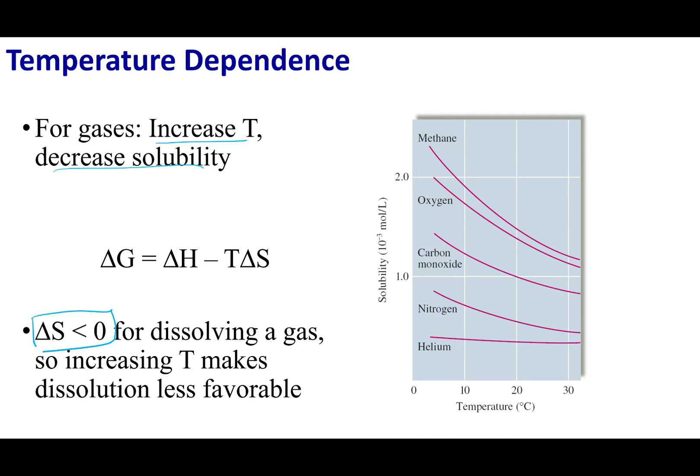So if that's the case, if my ΔS is negative, well, this whole term becomes positive. And what you'll notice is that if we increase my temperature, you will see that this is going to start to go up. And if you make it more and more positive, then ΔG becomes more and more positive, and thus the solubility goes down. So for most gases, as you increase the temperature, the solubility is going to go down.